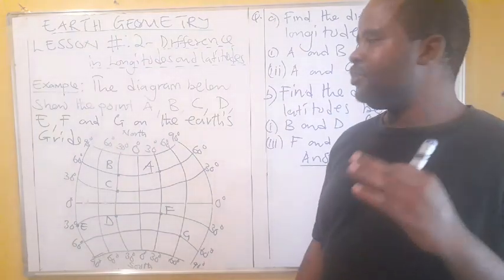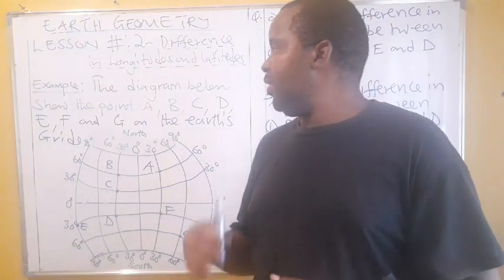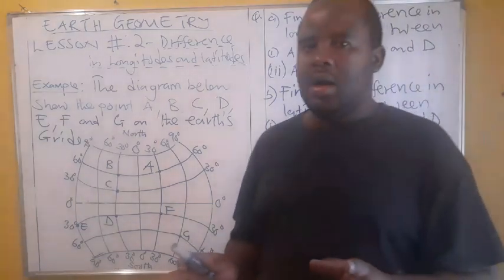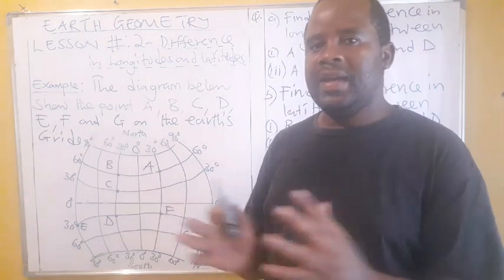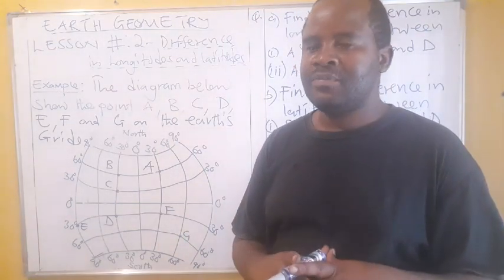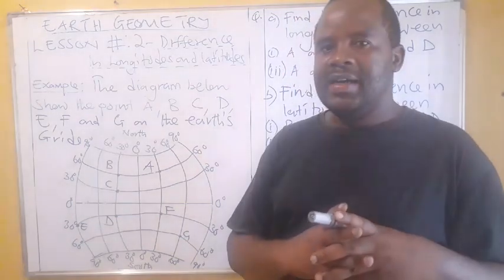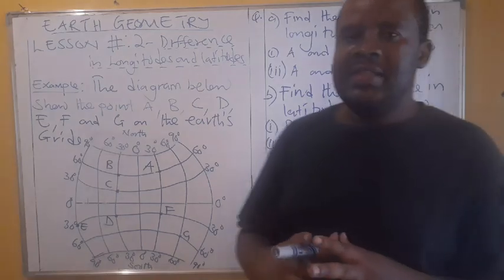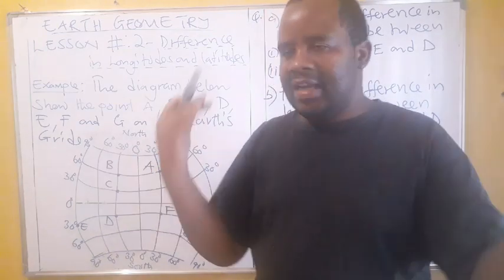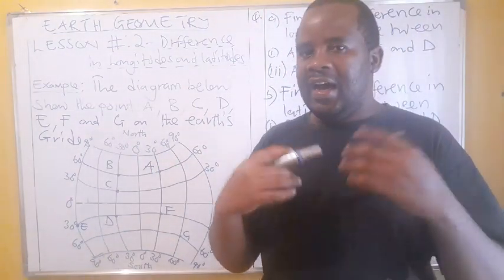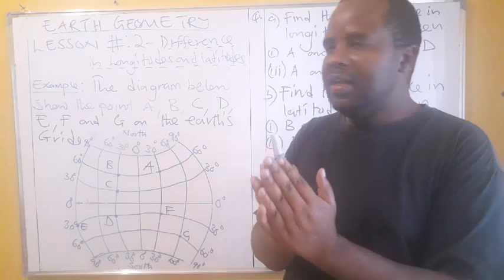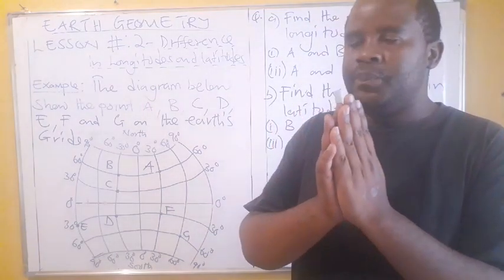When dealing with the difference in the longitudes, what brings about the difference is the position of the points. If the two points are on the same side of the Greenwich meridian, you get the difference by subtracting. But if the two points are on opposite sides of the Greenwich meridian, you get the difference by adding.